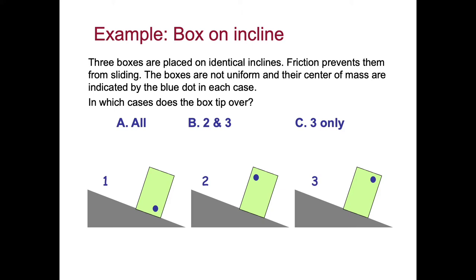Okay, hit pause if you need more time. The answer is C, 3 only. The reason is that the pivot point that the box would tip over on is the lower corner in all three cases. In cases 1 and 2, the weight of the center of mass is to the left of that pivot point, applying a counterclockwise torque. In case 3, the weight from the center of mass is past the edge of the block, producing a clockwise torque about this pivot point with no normal force on this side to oppose it, and therefore it will tip over.